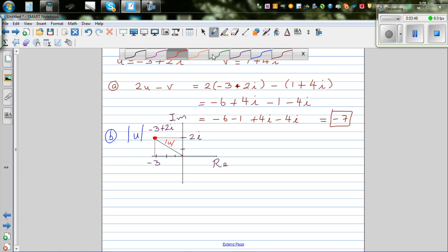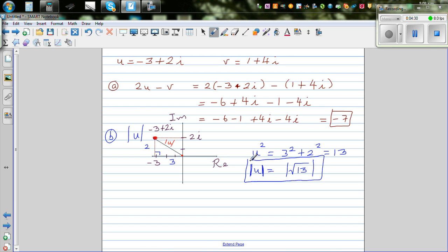Here you can use simple Pythagoras. This distance is 3, and this is 2. You can say u squared, the distance from here to here is called u. So u squared is 3 squared plus 2 squared, which is 9 plus 4, which is 13. The modulus of u is the positive value, which is square root of 13. This means the distance of this complex number from the origin is root 13.